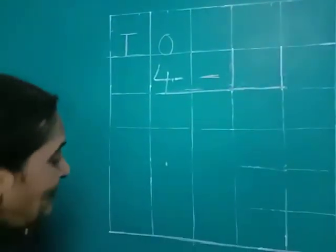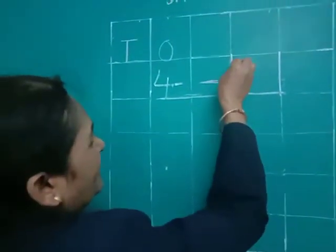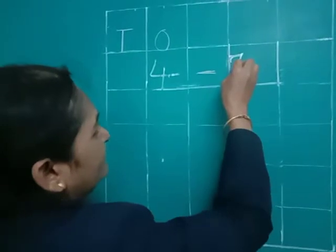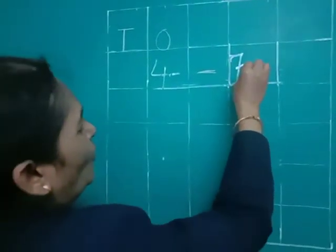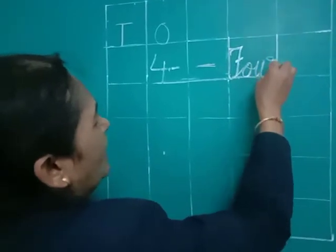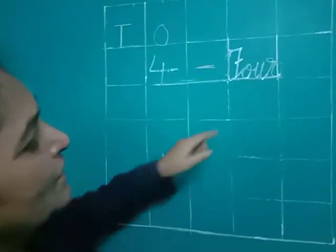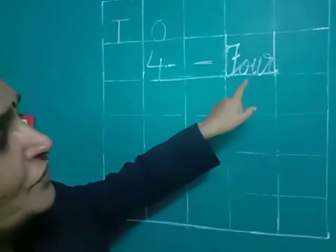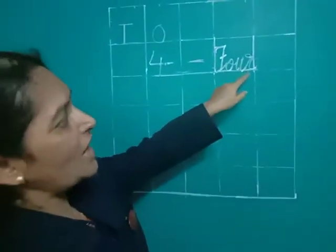Dash. F capital O-U-R-4. F-O-U-R-4. Say all of you. F-O-U-R-4.